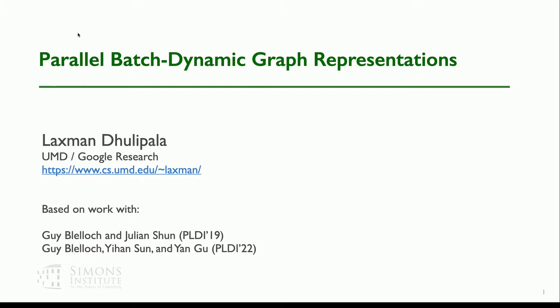Lakshman is an assistant professor in the Department of Computer Science at University of Maryland. He obtained his PhD from Carnegie Mellon University where he was advised by Guy Blelloch and was then a postdoc at MIT with Julian Shun. His research revolves around designing high-performance parallel dynamic and streaming graph processing algorithms and systems with a focus on both practical and theoretical efficiency. My name is Lakshman, I'm with UMD and Google Research.